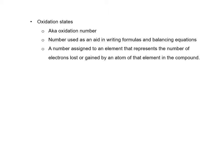Now we're going to look at oxidation state. Oxidation state is also called oxidation number, and it's kind of just a fancy word for charge. It's a number used to help us write formulas and balance equations — a number we assign to elements that represents how many electrons have either been gained or lost by an atom of that element in a compound.